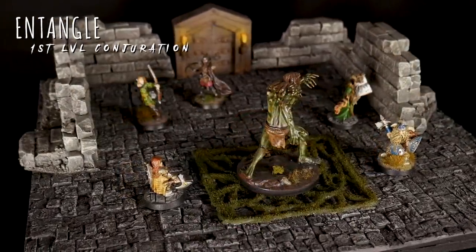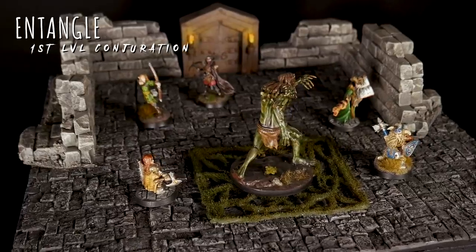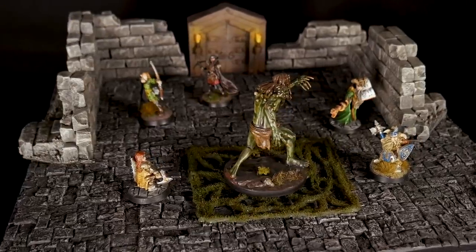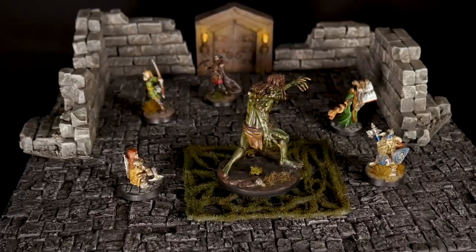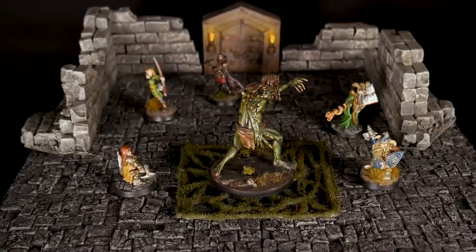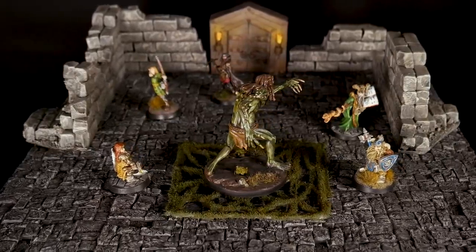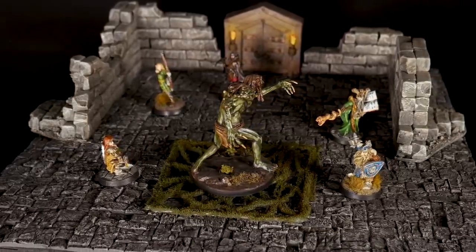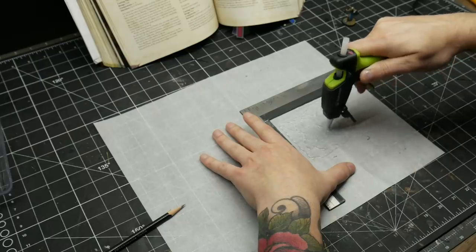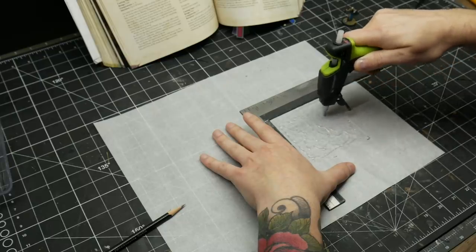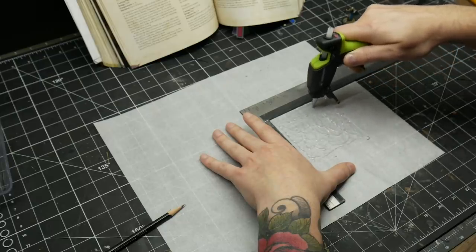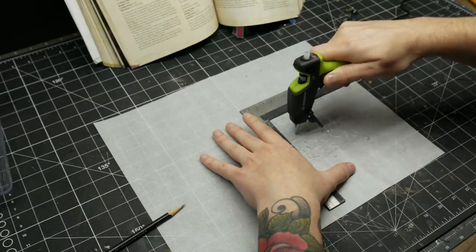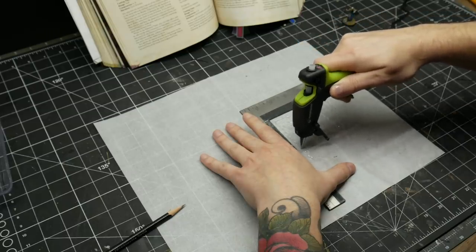Entangle. Grasping weeds and vines sprout from the ground in a 20-foot square. For the duration, these plants turn the ground in the area into difficult terrain. A creature in the area must succeed on a strength saving throw or be restrained by the plants. This one started out in a very similar fashion, again with a 4-inch square of hot glue. This time though, I just used regular clear hot glue. I also made the coverage a lot more dense and the lines much wider.